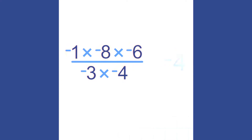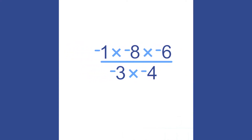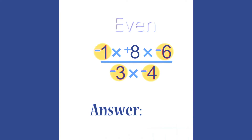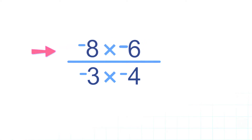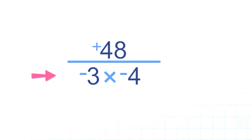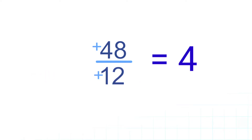Now let's try a more complicated example. We have negative 1 times positive 8 times negative 6, divided by negative 3 times negative 4. If we analyze, we have an even number of negative factors, so therefore we will come up with a positive number. Negative 1 times 8 is negative 8; negative 8 times negative 6 is positive 48; negative 3 times negative 4 is positive 12; then positive 48 divided by positive 12 is 4.